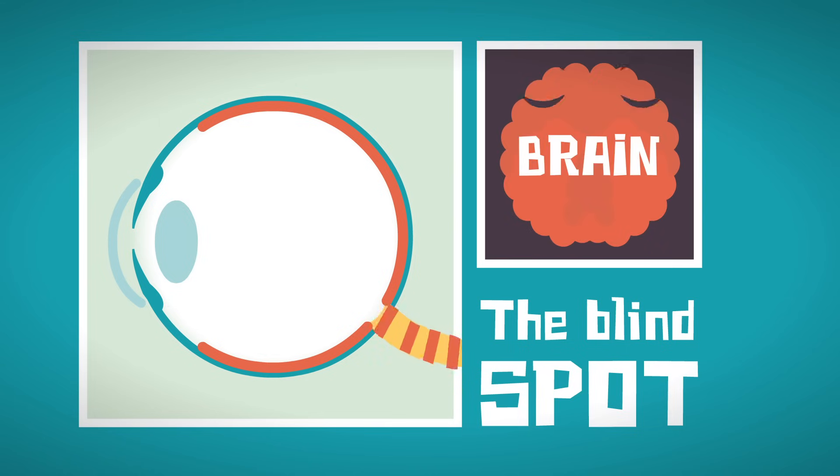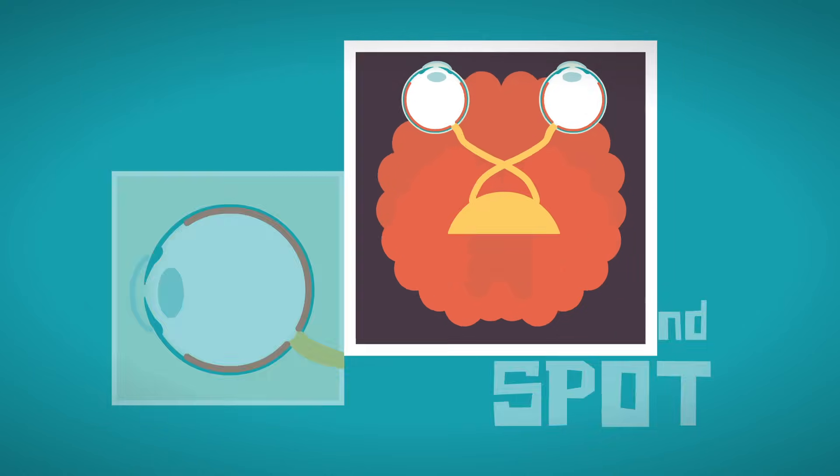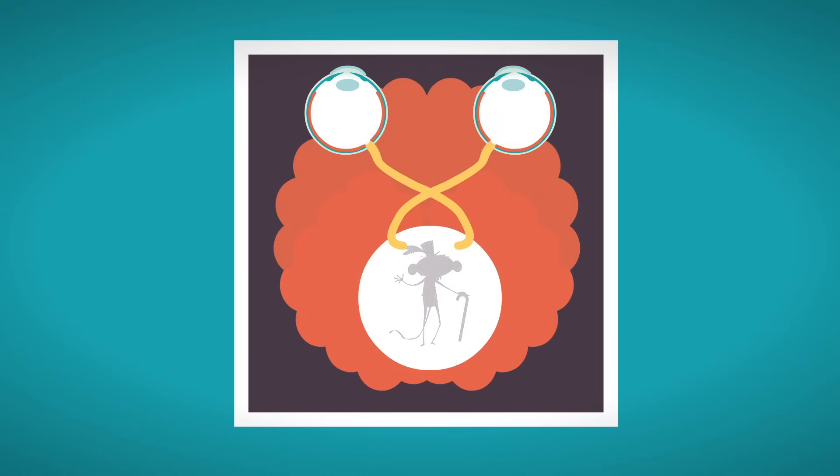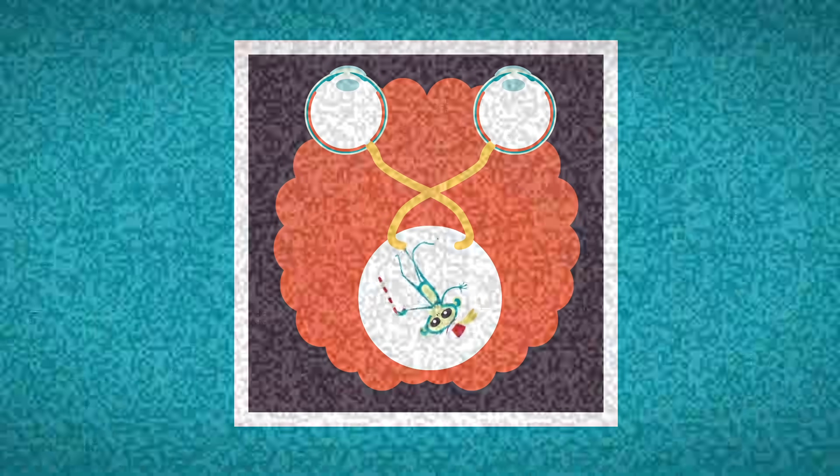In a very real sense, we see with our brains, not our eyes. And because our brains, including the retinas, are so involved in the process, we are susceptible to visual illusions.